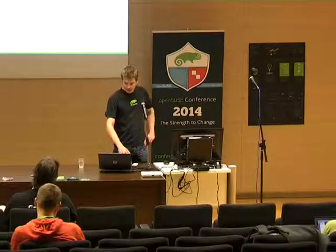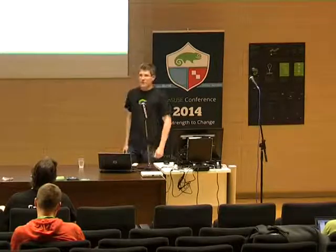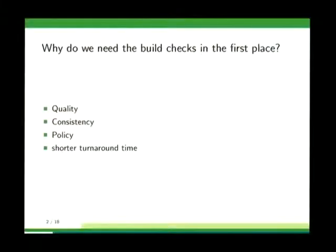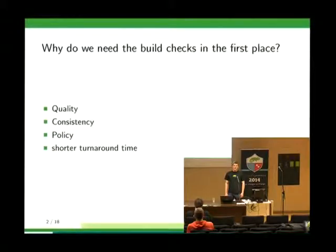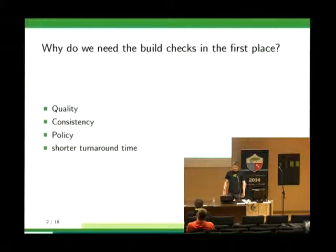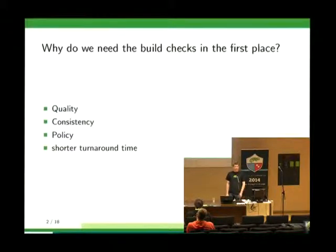Let's start. Why do we have those checks in the first place? They are the first level of quality check — basically the first level of QA. The machine can detect the most stupid errors you make, so a human or the reviewer doesn't have to check them.